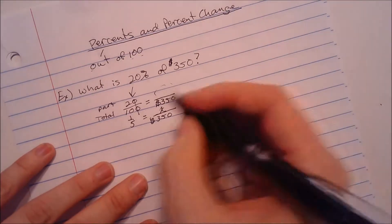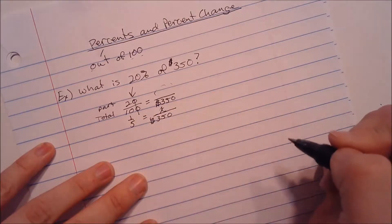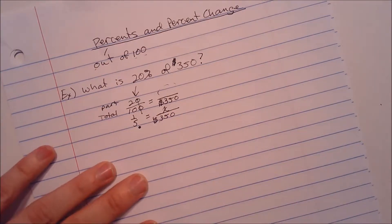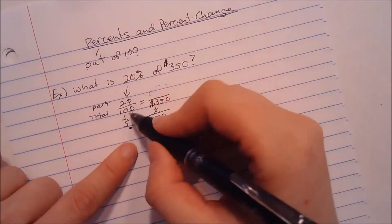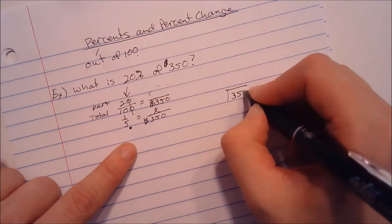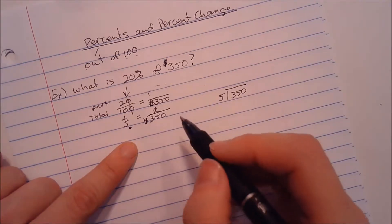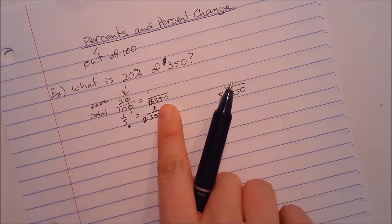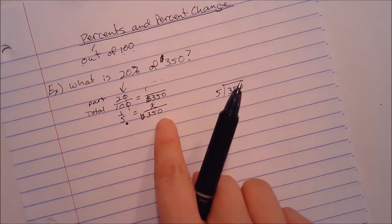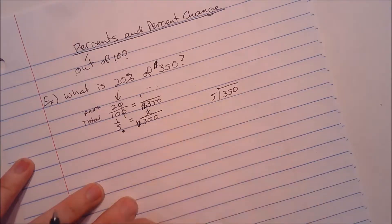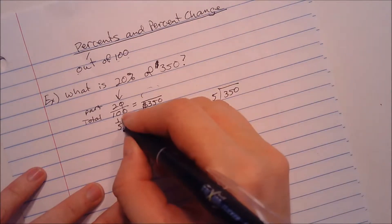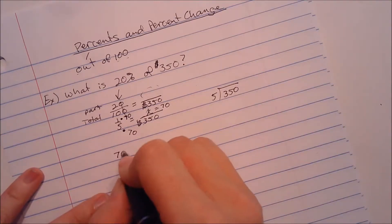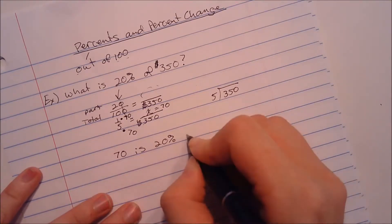1 fifth equals x over 350. You can do this one of two ways. You can either cross-multiply and divide by 5, or you can think, 5 times what is 350? What I see here is 5 times something is 350. I know 5 times 7 is 35, and this is 10 times bigger, so it must be 5 times 70. Then you do the same on top. 1 times 70 is 70. That means 70 is 20% of 350.